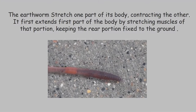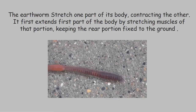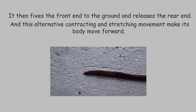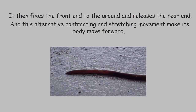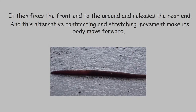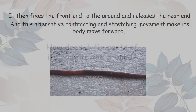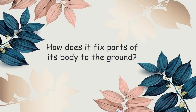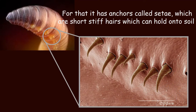It first extends the front part of its body by stretching the muscles of that portion, keeping the rear portion fixed to the ground. It then fixes the front end to the ground and releases the rear end forward. This alternating contracting and stretching movement makes its body move forward. It has anchors called setae, which are short stiff bristles that can hold on to soil.